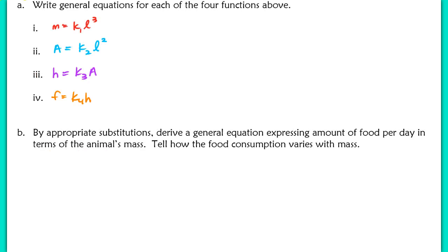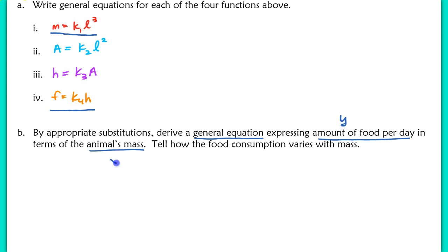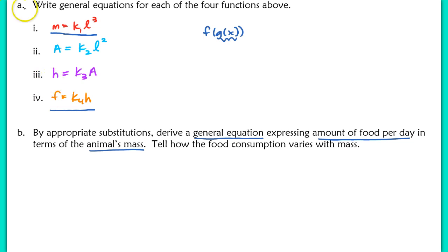Now in part B, we use substitution to derive a new general equation expressing the amount of food per day in terms of the animal's mass. Right now, mass is in terms of length and food is in terms of heat loss — they're not connected. We need to create a function relating food (the dependent variable) to mass (the independent variable). We'll make multiple substitutions, which is essentially composing functions — just like F of G of X from first semester, where we input one function into another.